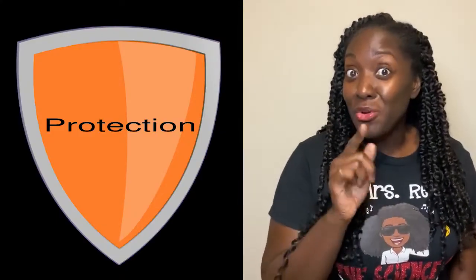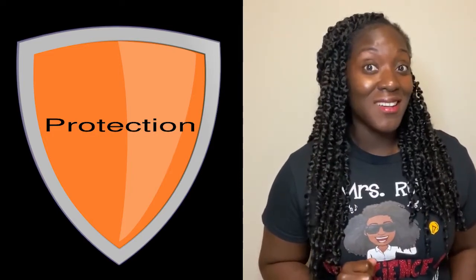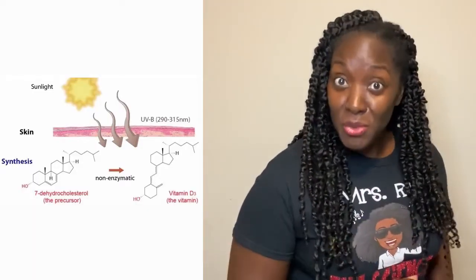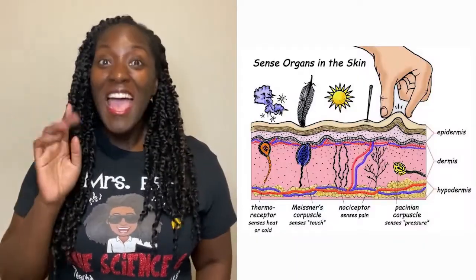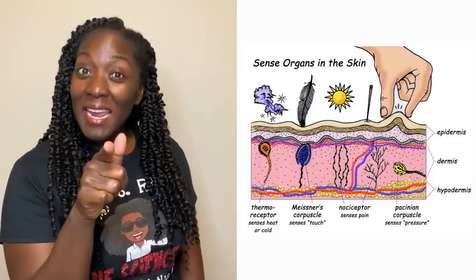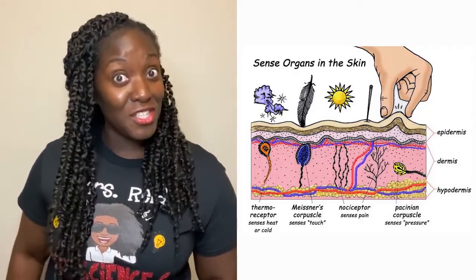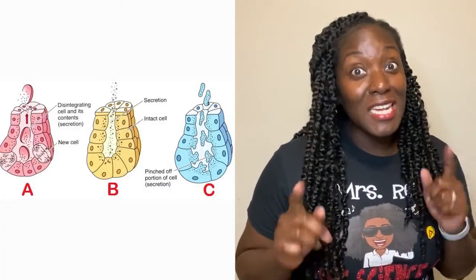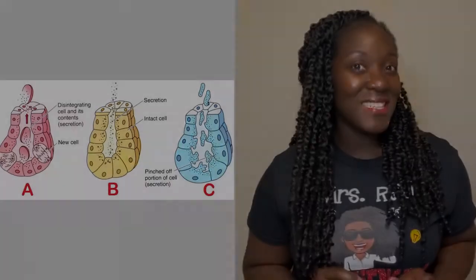Skin is the largest organ of the body, and since it's the largest organ, it has some pretty important functions. First, it protects you from pathogens and fluid loss. Two, it maintains your temperature. Three, it synthesizes and stores nutrients. Four, it has receptors that detect pain, temperature, and touch. And five, it has glands that can excrete and secrete substances.